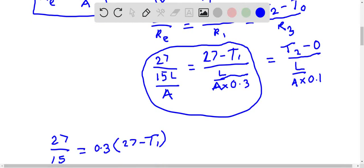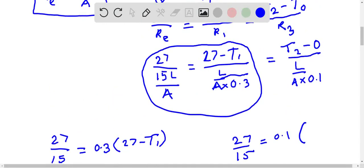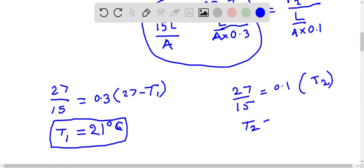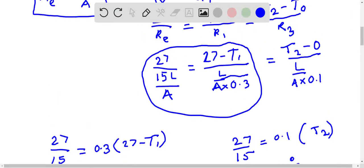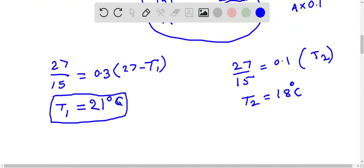Now we will again consider the first and the last expression. So 27/15 = 0.1 times T2. T2 will be equal to 18 degrees. So we have got the interface temperatures of both the materials.